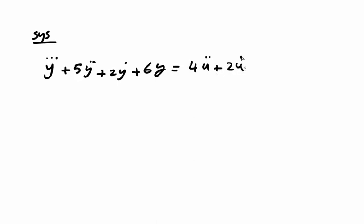For example, if I have a system: y triple dot plus 5y double dot plus 2y dot plus 6y equals 4u double dot plus 2u dot minus 3u. First, in this method we replace y and u by another variable.